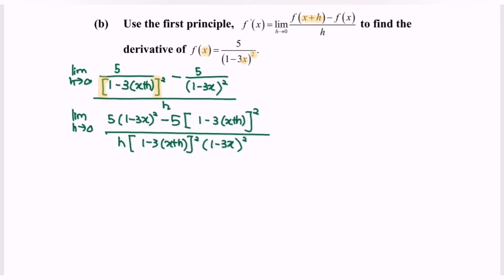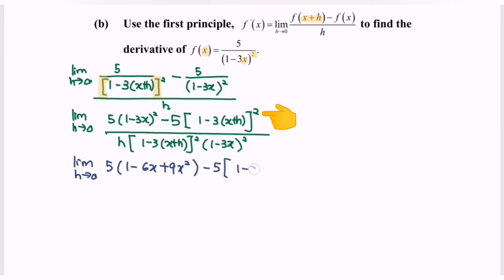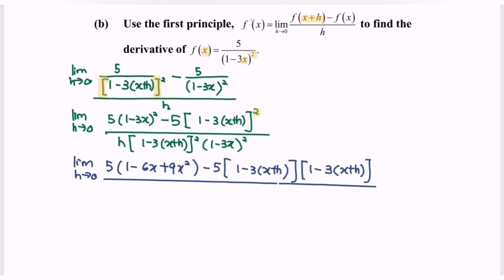Next, my suggestion would be to expand the numerator. So referring to the numerator, we will have the limit when h approaching 0: 5 bracket (1 minus 6x plus 9x squared), minus 5 bracket with 1 minus 3(x plus h) multiplied with another 1 minus 3(x plus h). Because we have a square, this appears twice, all over h bracket 1 minus 3(x plus h) bracket squared, multiplied with 1 minus 3x bracket squared.